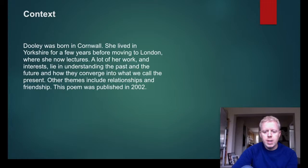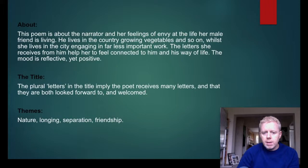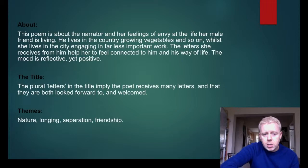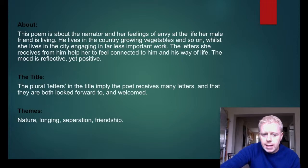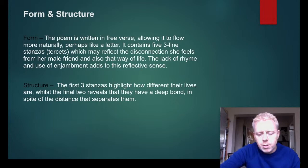The poem was published in 2002 and focuses on the friendship and relationship between two people. It's about the narrator and her feelings of envy at the life her male friend is living — he lives in the country growing vegetables, while she lives in the city engaging in what she considers far less important work. The letters she receives from him help her feel connected to his way of life. The mood is reflective yet positive, and the plural 'letters' in the title implies the poet receives many letters, looked forward to and welcomed. Themes include nature, longing, separation, and friendship.